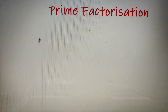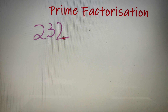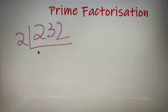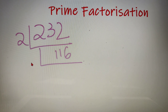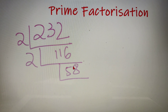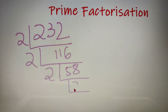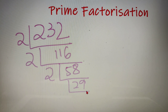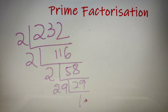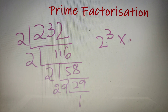Let's take another example. Suppose we have to prime factorize 232. I know 232 is divisible by 2, giving quotient 116. Now 116 is still divisible by 2, giving quotient 58. Then 58 is divisible by 2, giving quotient 29. Since 29 is a prime number, I divide it by 29 and get 1. So the prime factorization of 232 is 2 to the power 3 into 29.